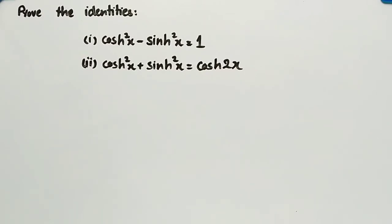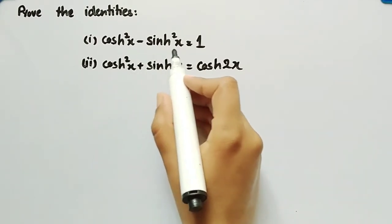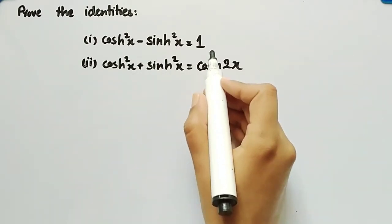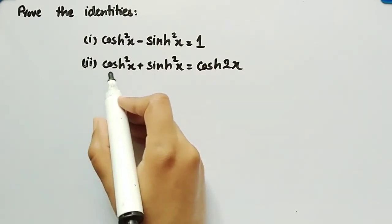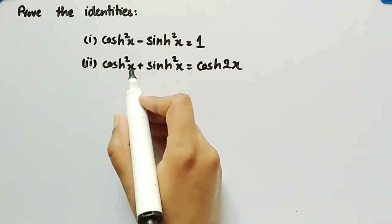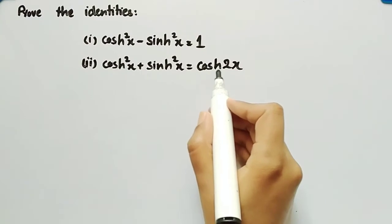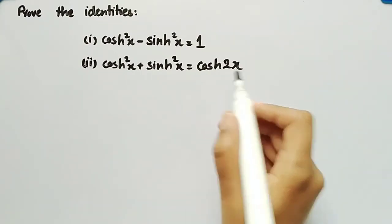In this video, we will prove two identities. The first one is cosh²(x) minus sinh²(x) is equal to 1. And the second one is cosh²(x) plus sinh²(x) is equal to cosh(2x).